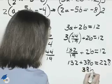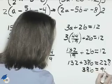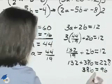that will be 38b equals 96. Divide both sides by 38.